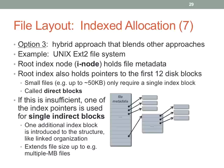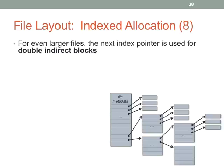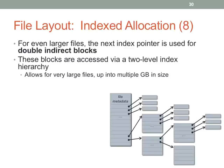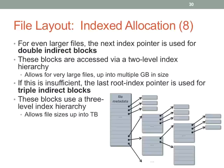Once you get past the first direct blocks for tiny files, you get into single indirect blocks — you go through one more level of indexing before reaching the data blocks. This extends file sizes to multiple megabytes with no problem. If you get really large, you use double indirect blocks, where you go through two more levels of indexes to reach the data blocks. And for really crazy sizes, you have triple indirect blocks.